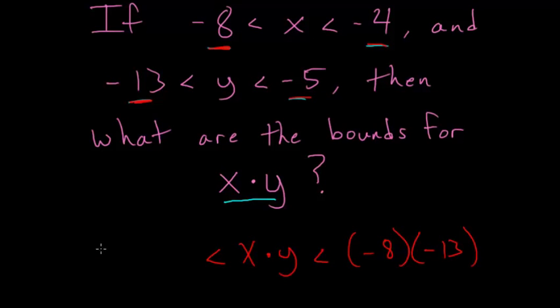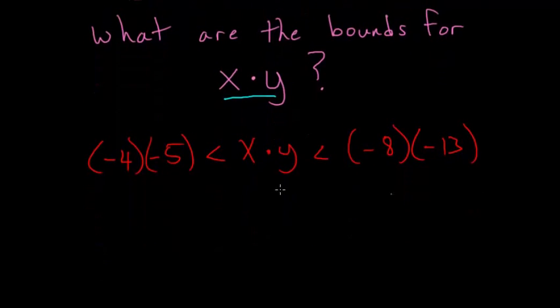So x times y is always bigger than negative 4 times negative 5. After simplifying this, we know that x times y is always less than negative 8 times negative 13, which would be positive 104. And x times y is bigger than negative 4 times negative 5, which is positive 20.